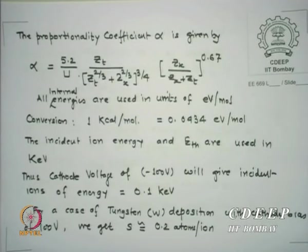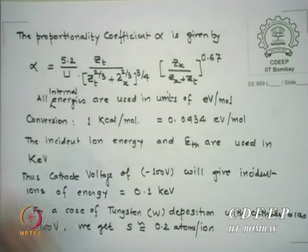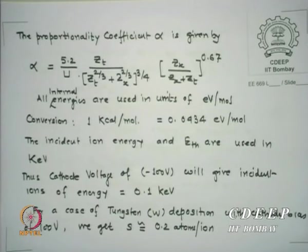Alpha can be derived as 5.2 divided by U_s times Z_T / (Z_T^(2/3) + Z_X^(2/3))^(3/4) times (Z_X / (Z_X + Z_T))^0.7. Please remember all internal energies in this formula are in eV per mole; 1 kcal/mol equals 0.0434 eV/mol. For the case of tungsten using alpha values for tungsten and argon, at 100 volts the sputtering yield S is typically about 0.2 atoms per ion — meaning 5 incident argon ions are needed to eject 1 tungsten atom.